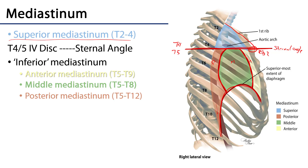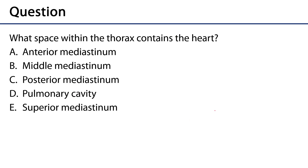This leads us to the assessment question for the video: what space within the thorax contains the heart? Is it the anterior mediastinum, the middle mediastinum, the posterior mediastinum, the pulmonary cavity, or the superior mediastinum? The heart is surrounded by the pericardium and the pericardium defines where the middle mediastinum exists. So wherever the pericardium is, is the middle mediastinum. Therefore the heart must be found within the middle mediastinum.